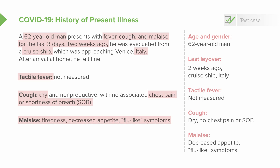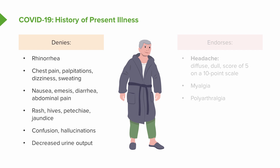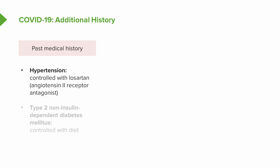On review of systems, Mr. Lecturio denies upper respiratory tract symptoms like rhinorrhea or congestion. He denies cardiac symptoms — no chest pain, palpitations, dizziness, or sweating. He denies prominent GI symptoms — no nausea, vomiting, diarrhea, or abdominal pain. No rashes to suggest a viral exanthem, and no confusion or hallucinations. He denies decreased urine output, arguing against end-organ dysfunction. He does endorse a diffuse non-specific headache and diffuse myalgias and polyarthralgias.